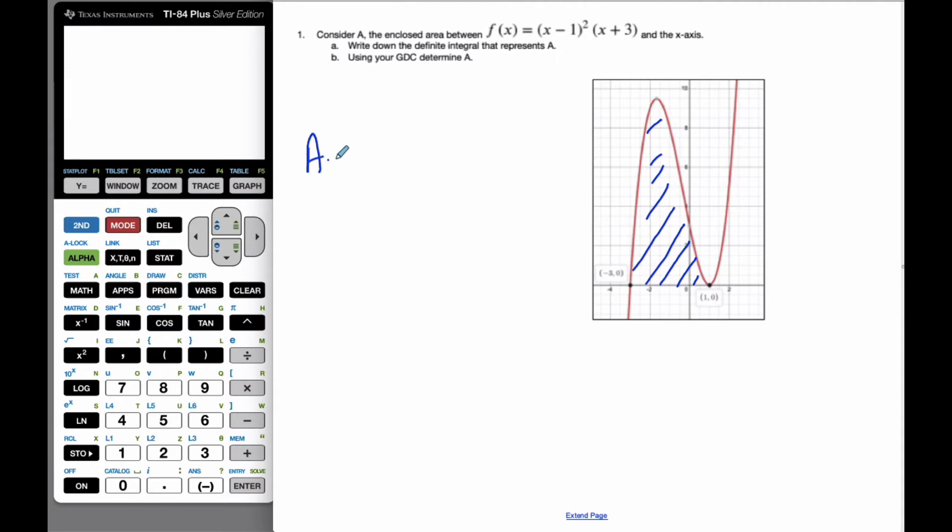So A is equal to, well, the elongated S is the definite integral. I'm going to go from negative 3, my x value of negative 3, to a value of 1, my upper limit, because it's all this area in here, of my function f(x) dx. And because f(x) is defined, I don't actually have to put it, I can just write f(x).